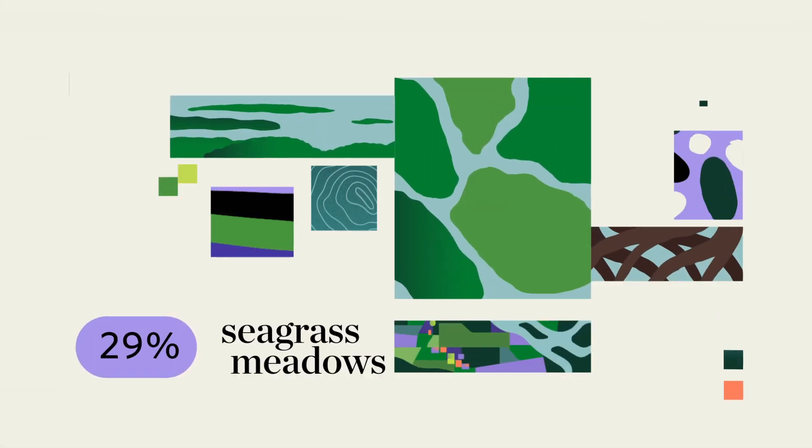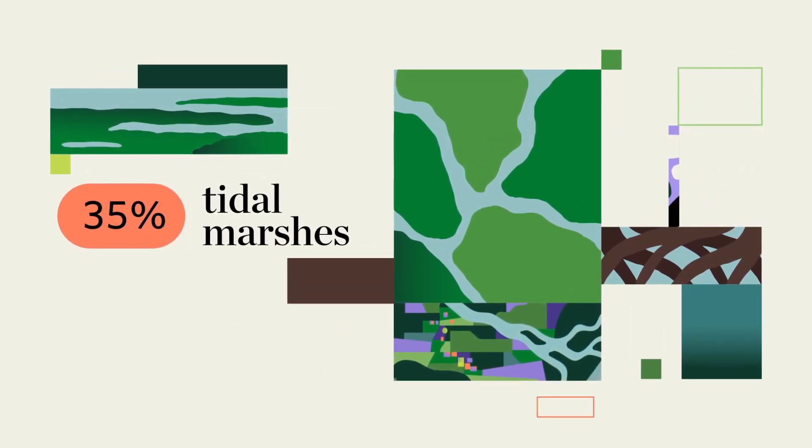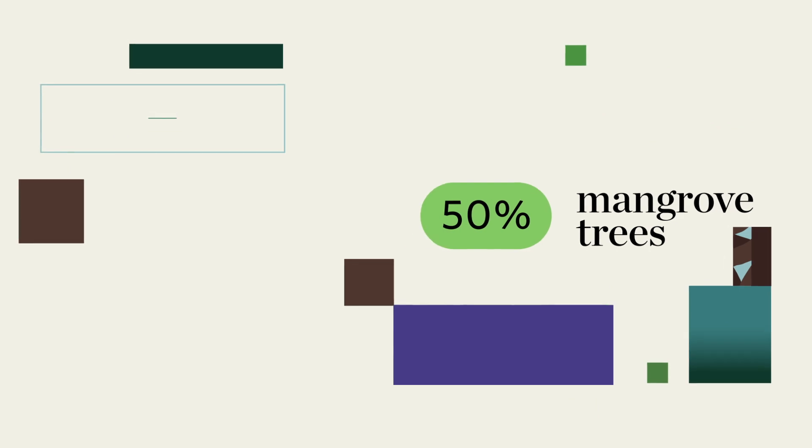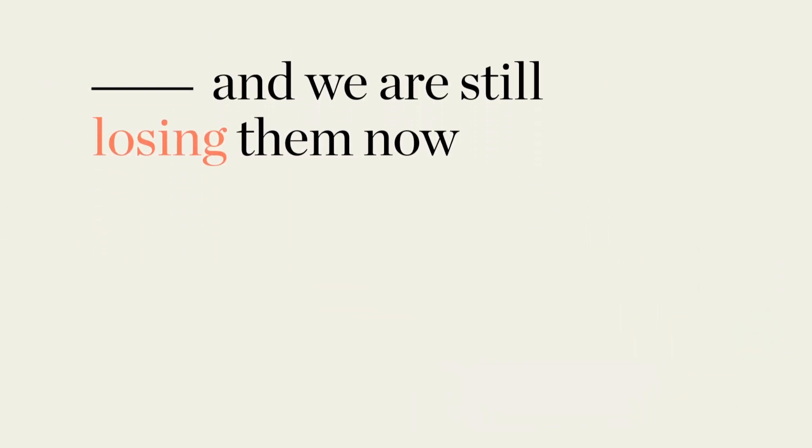But these mighty defenders need our help. All around the world, we've lost up to 29% of seagrass meadows, 35% of tidal marshes, and 50% of mangroves. And we are still losing them now.